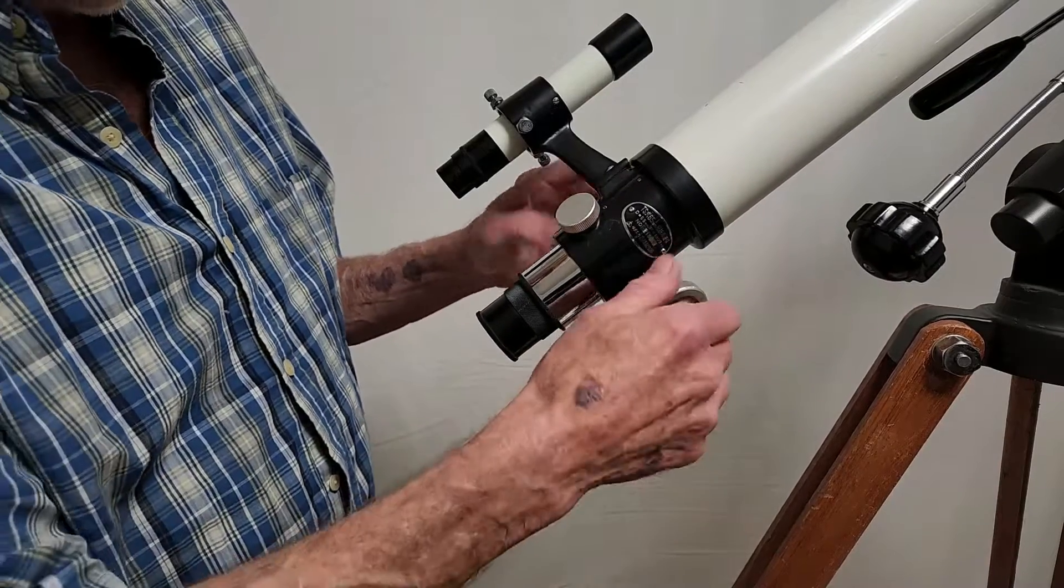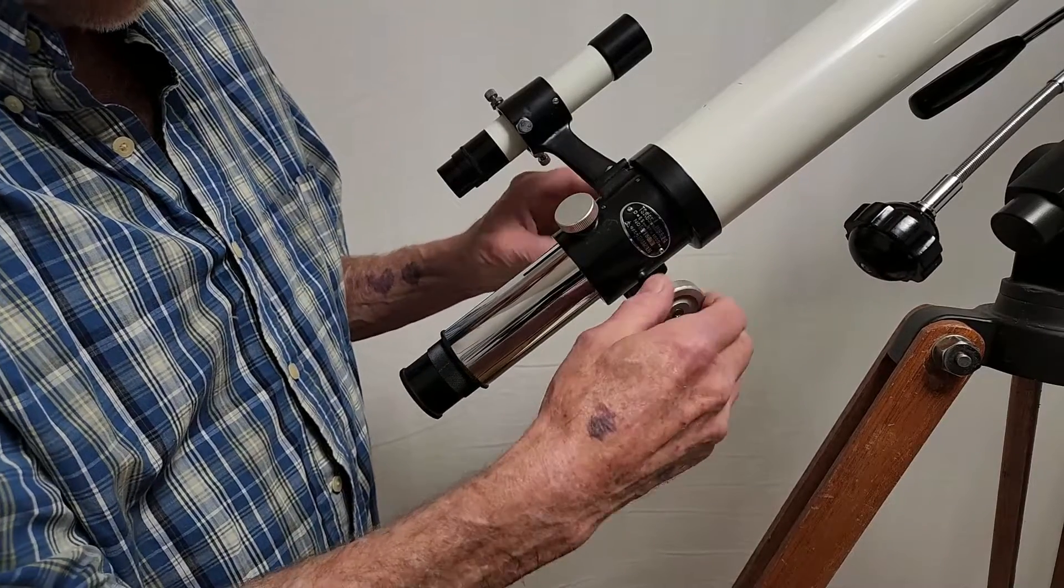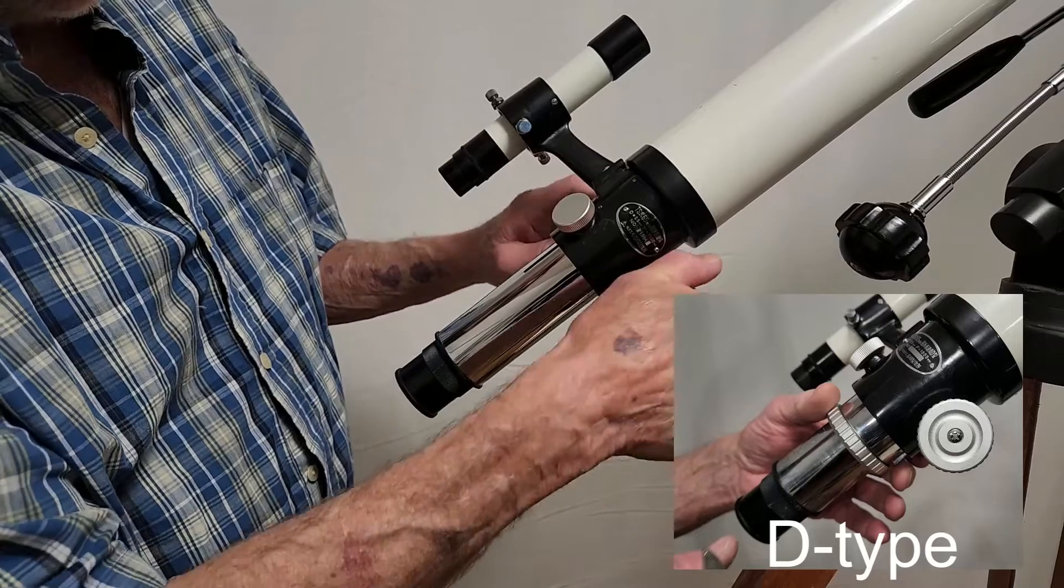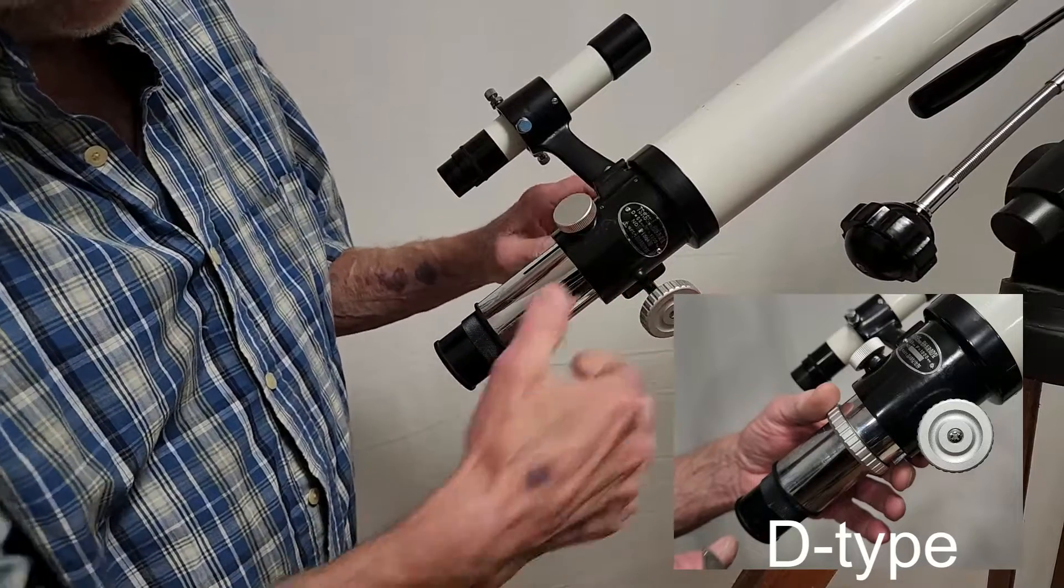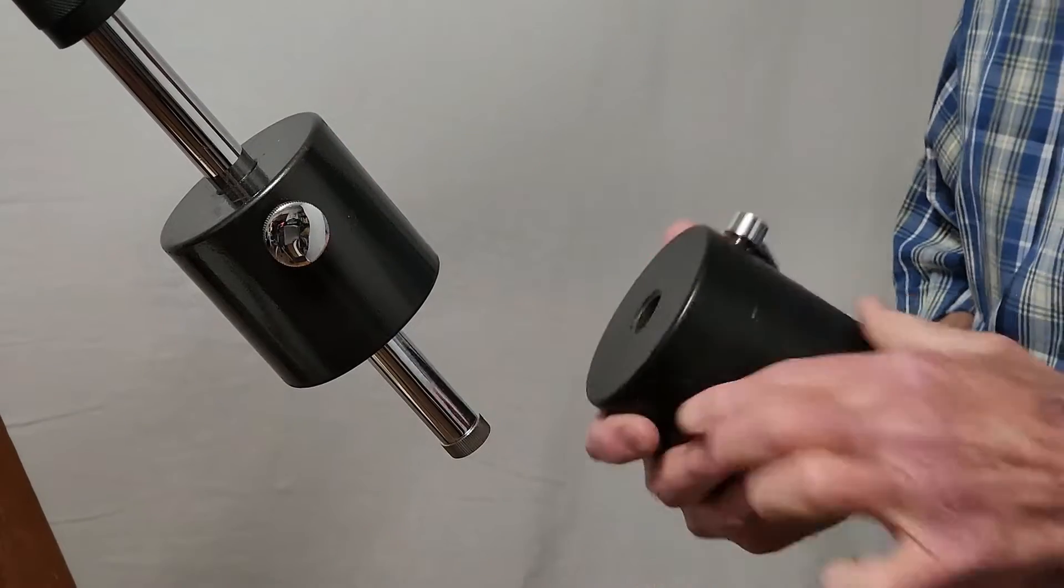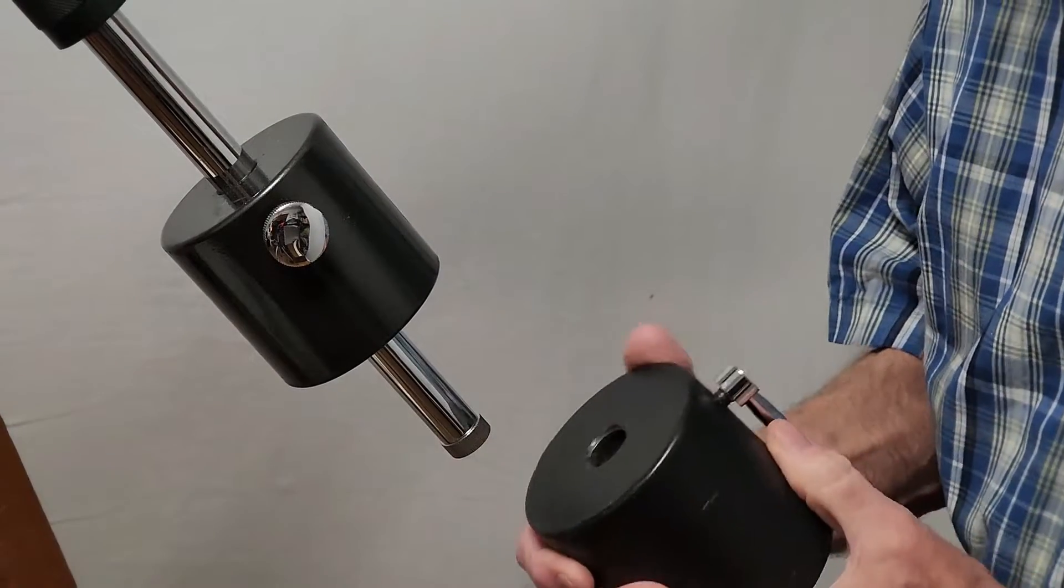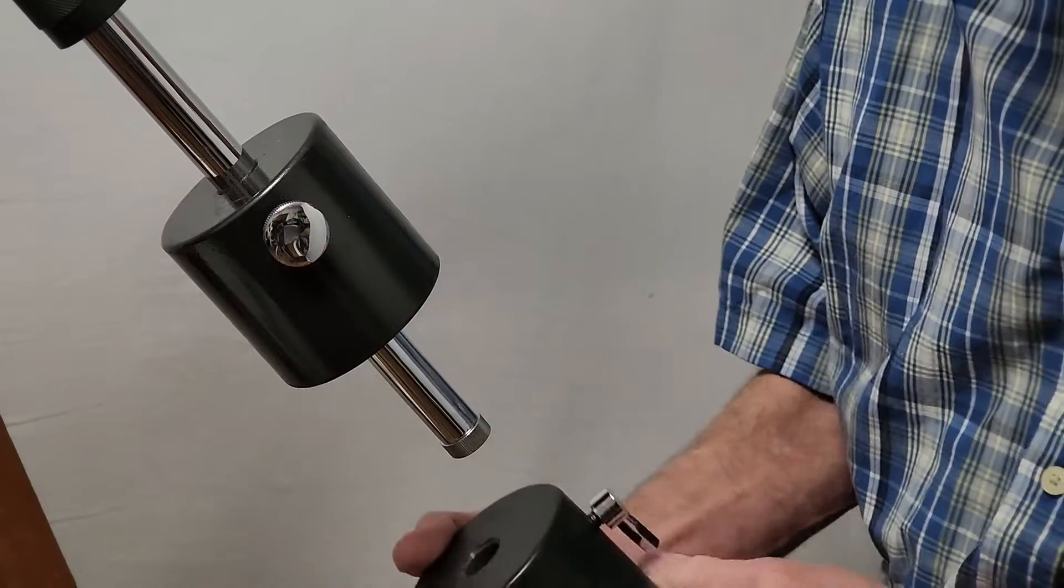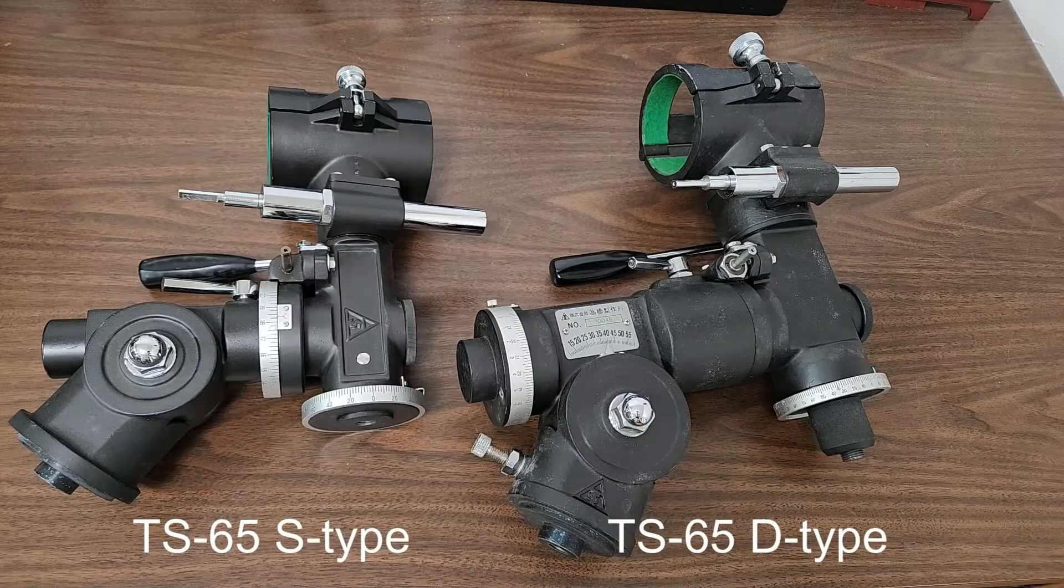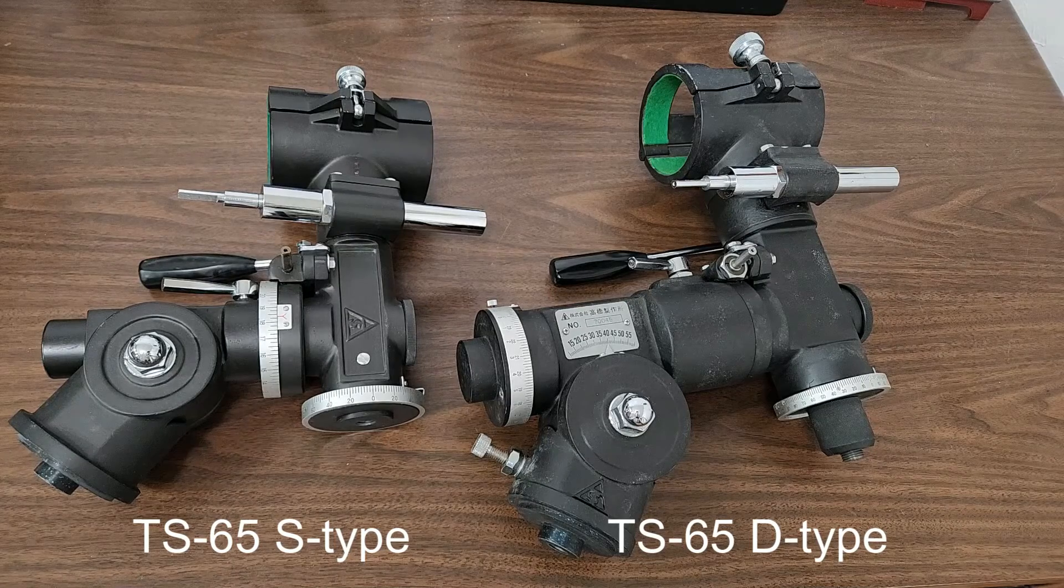The focuser on this scope has a very, very long draw to it, unlike the D-Type, which had a draw tube, if you remember. Here's the counterweight for the S-Type versus this counterweight for the D-Type. In fact, that will give you an idea of the difference in weight here. This will give you a real sense of the difference in scale between the two mounts.